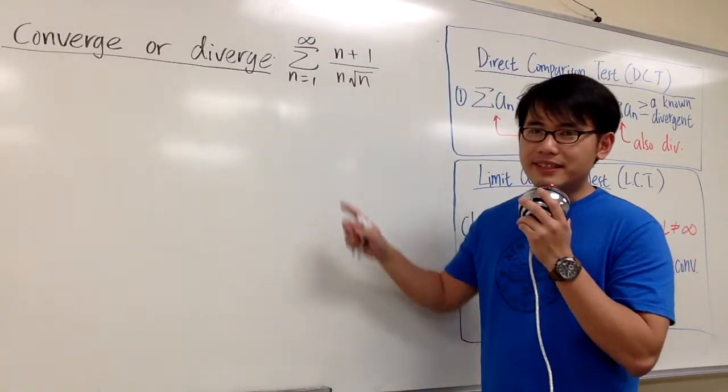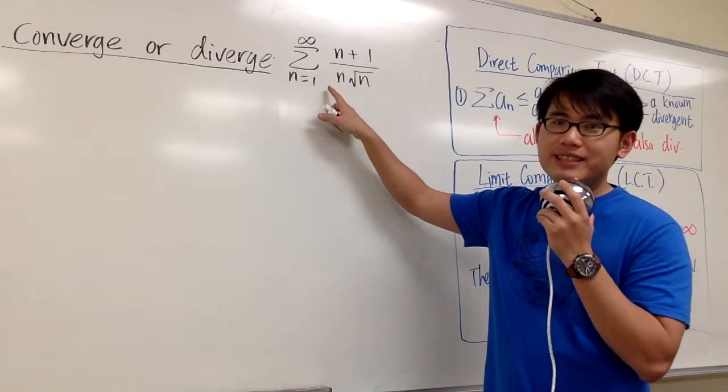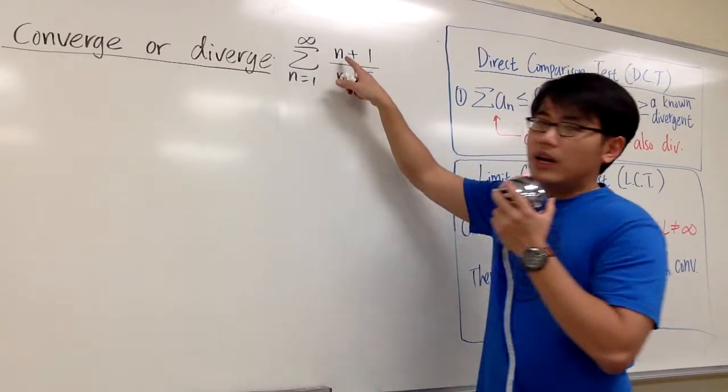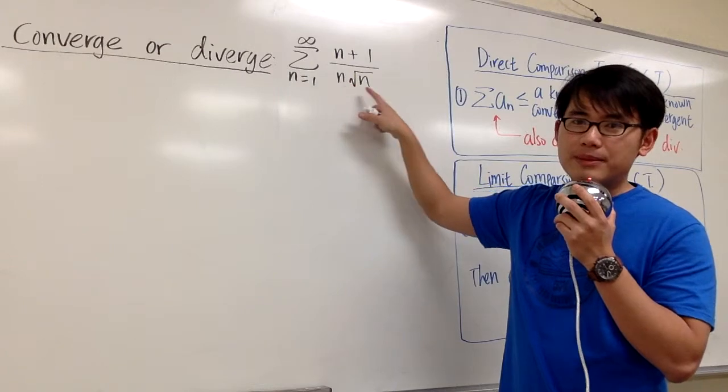Let me show you how we can use the comparison test to show that this series converges or diverges. So here we have sigma where n goes from 1 to infinity, n plus 1 over n times square root of n.